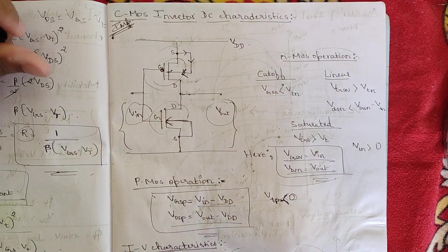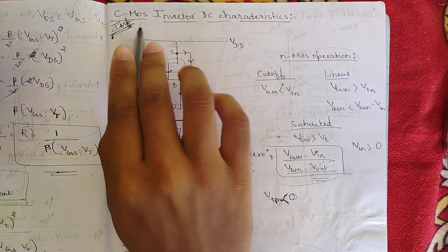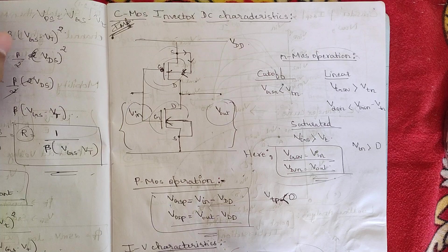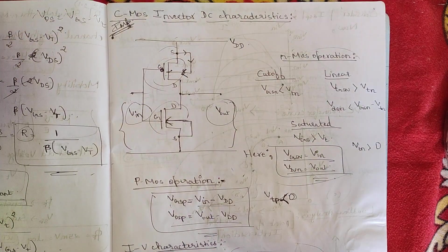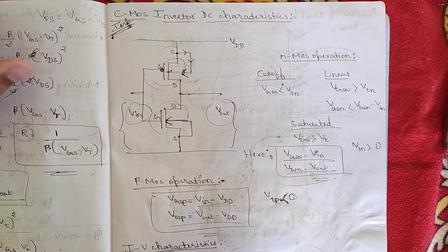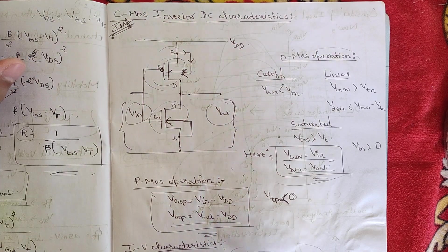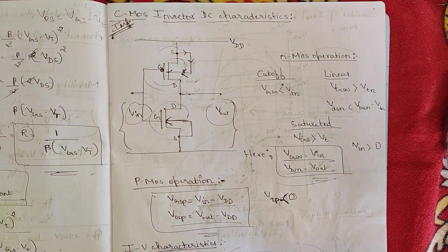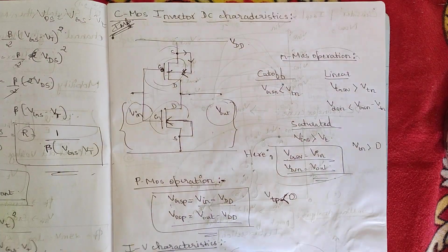The next concept we are going to discuss is the CMOS inverter DC characteristics. This is a very important topic — it is typically asked for 10 marks because it involves many diagrams and equations for different regions of operation in the characteristic plot. We will discuss this in full detail now.